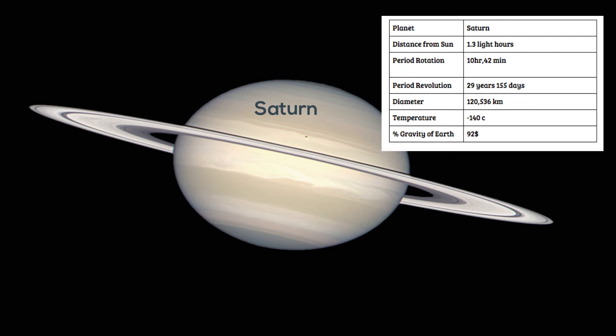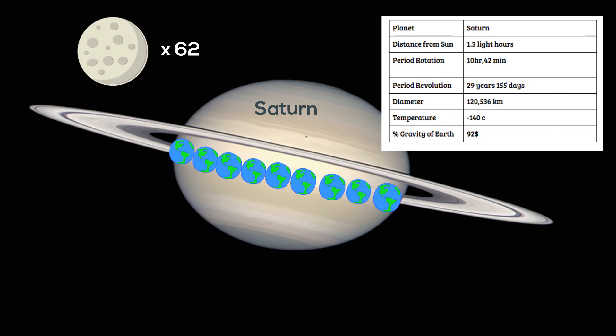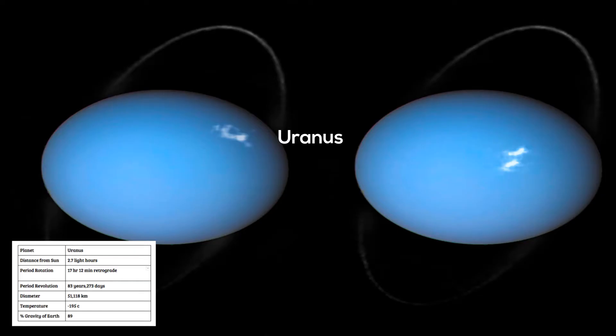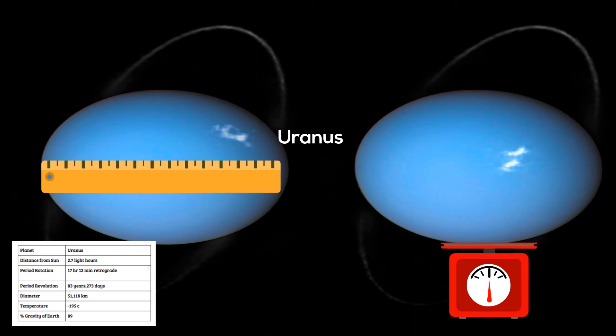Saturn is the sixth planet from the sun and the second largest after Jupiter. It has an average radius of about nine times that of Earth, and also has 62 satellites. Uranus is the seventh planet from the sun. It is also considered an ice giant, and has the third largest planetary radius and the fourth largest planetary mass in the solar system.